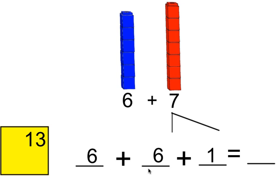6 plus 6 is 12, and one more is 13. So 6 plus 7 equals 13. This is how we do doubles plus 1. Give it a try.